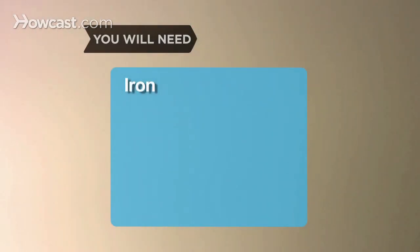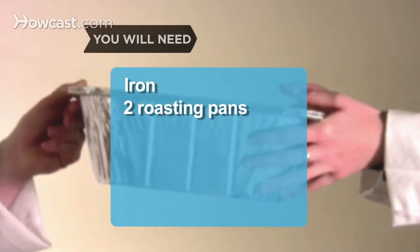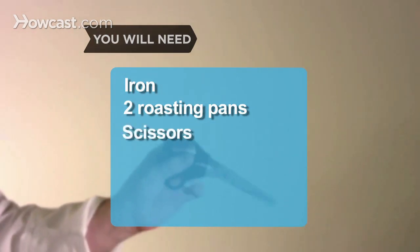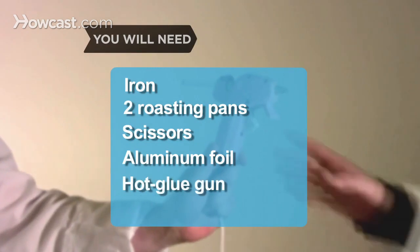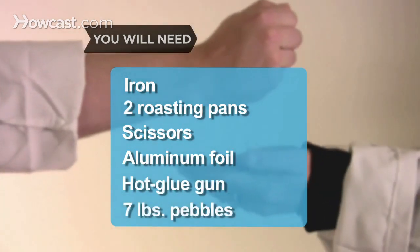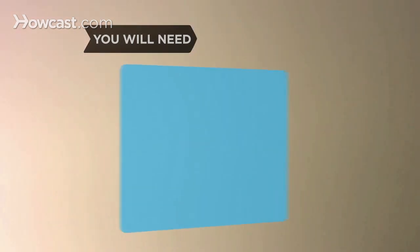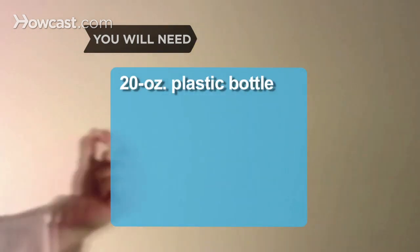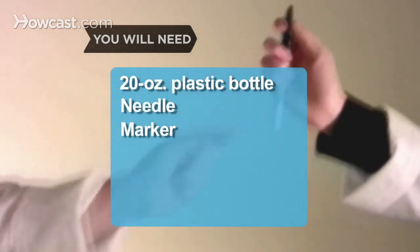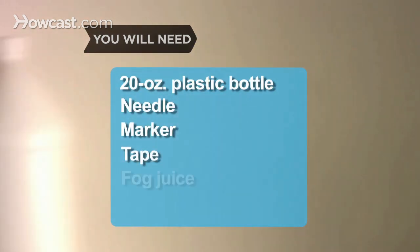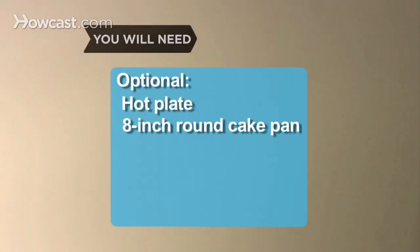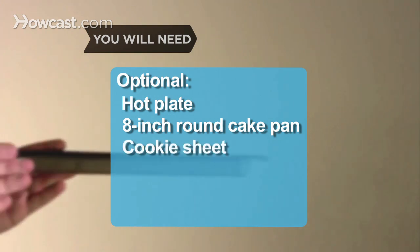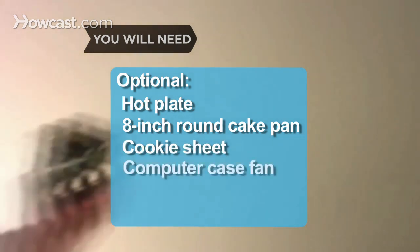You will need: an iron, 2 aluminum roasting pans about 5 inches deep or deeper, scissors, aluminum foil, a hot glue gun, 7 pounds of pebbles or gravel, a 20-ounce plastic bottle, a needle, a marker, tape and fog juice, a hot plate, an 8-inch round cake pan, a 17-by-12-inch cookie sheet, and a computer case fan.